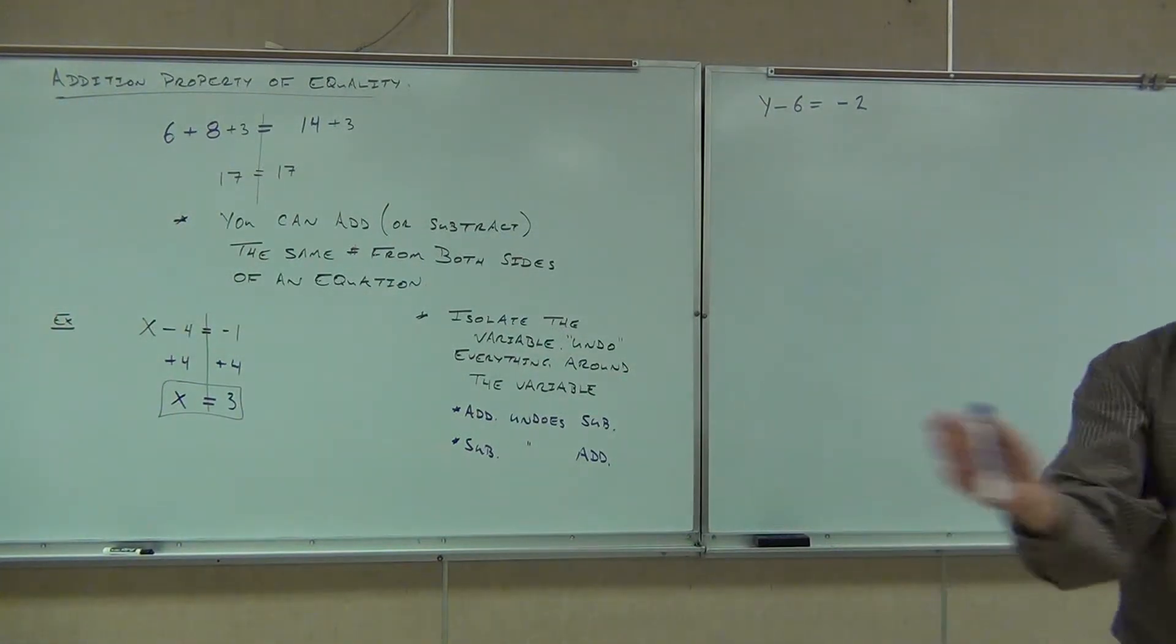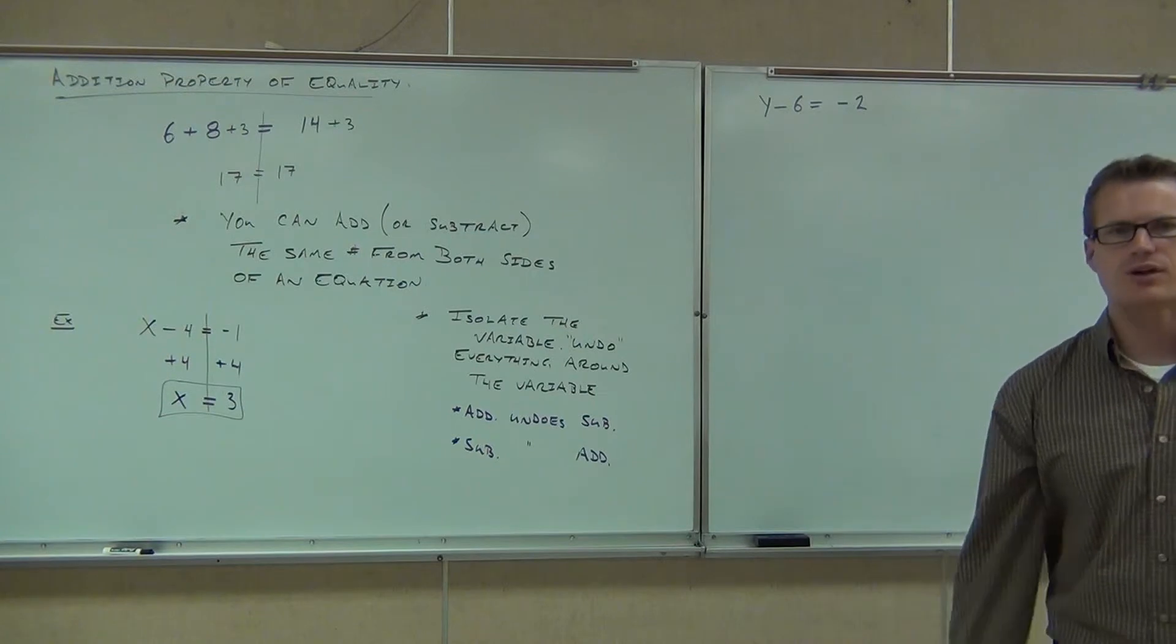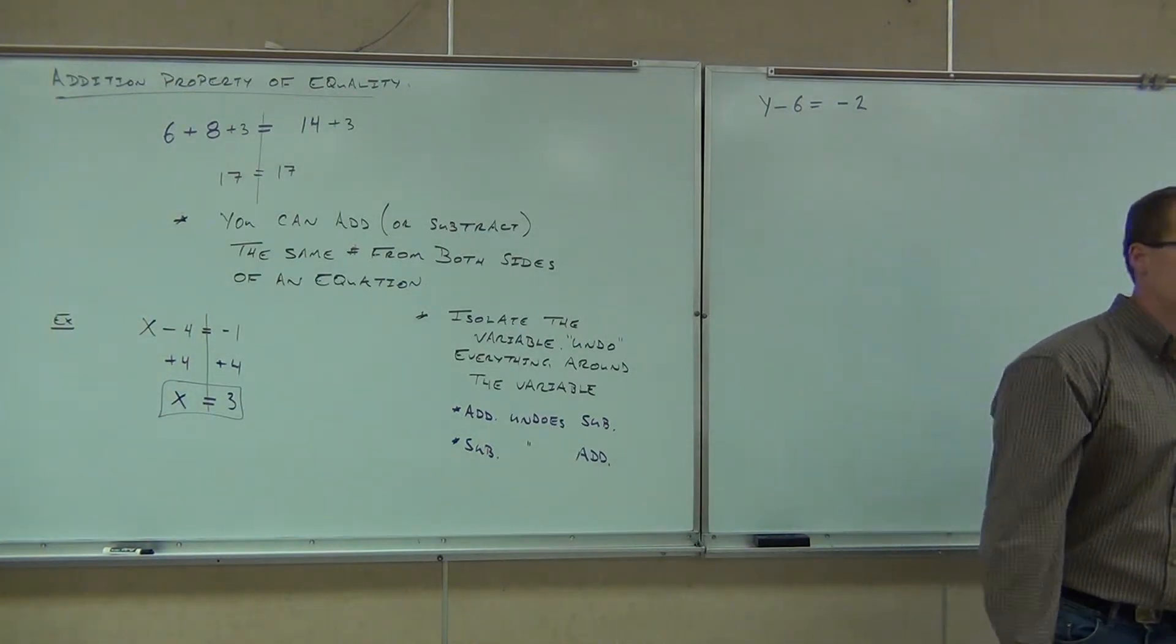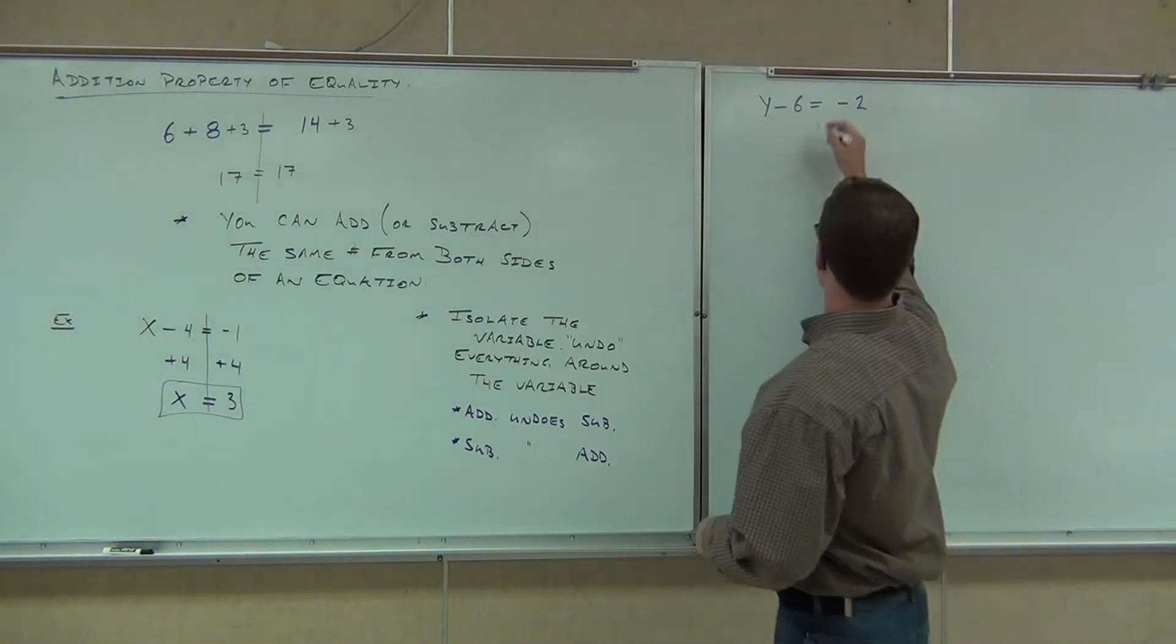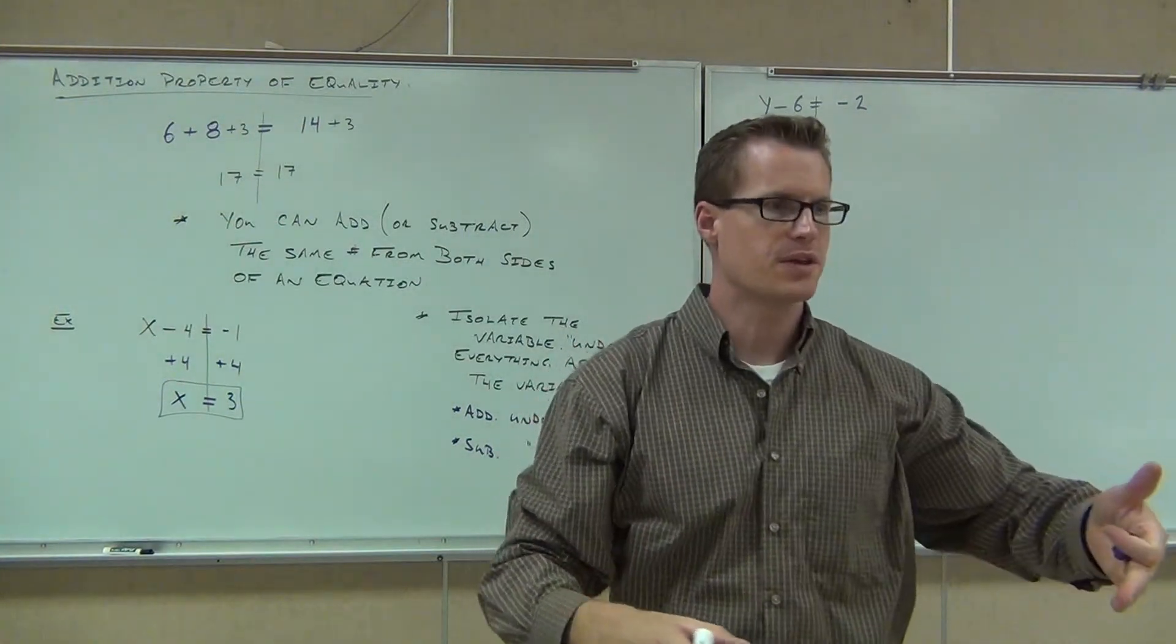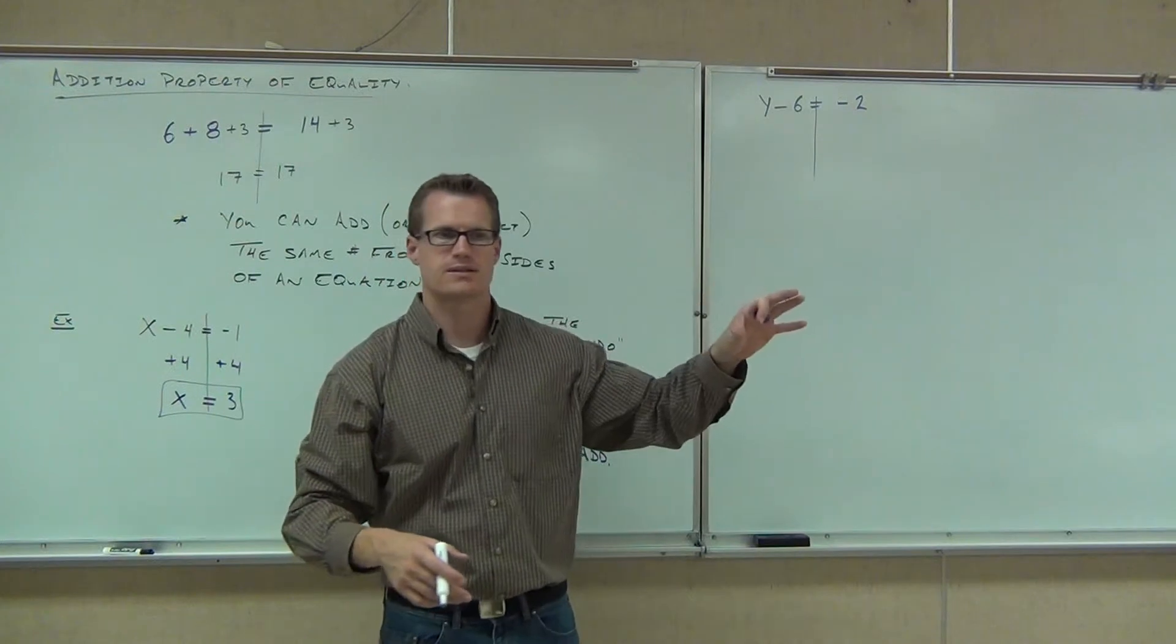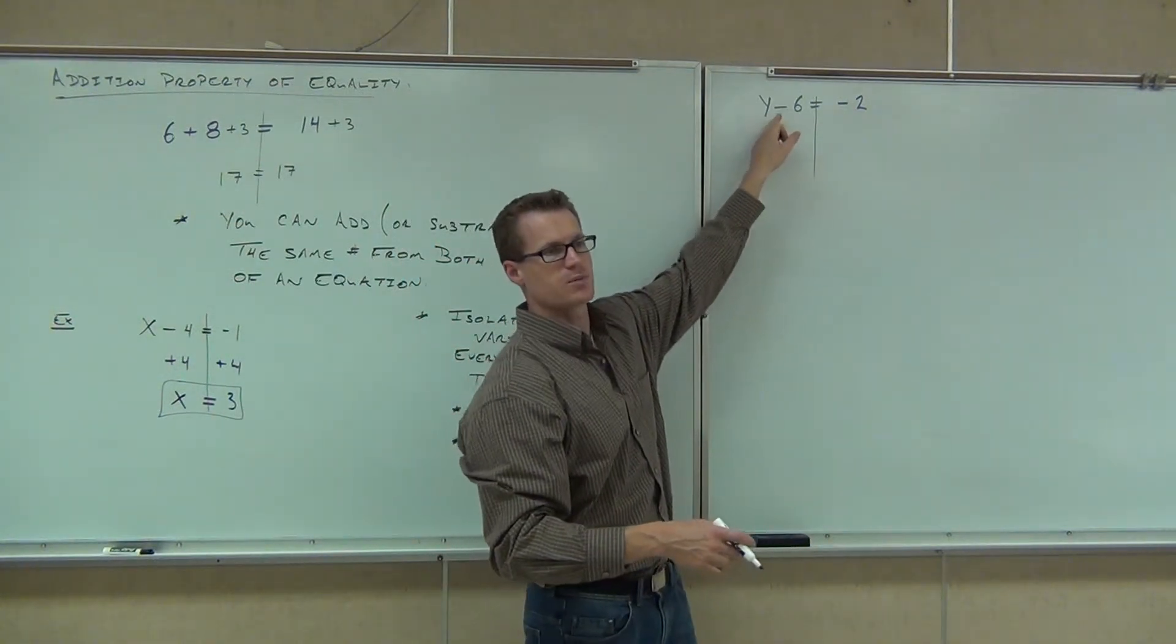Okay. So first of all, ladies and gentlemen, let's do this problem together. Is this an equation or an expression? It's got an equal sign. Very good. What's your variable? Y. Is there anything surrounding that variable that you need to get rid of? Yes. So we're going to draw our line. That signifies that we have two sides. That line goes always underneath the equal sign saying what I do to the left-hand side, I also have to do to the right-hand side.